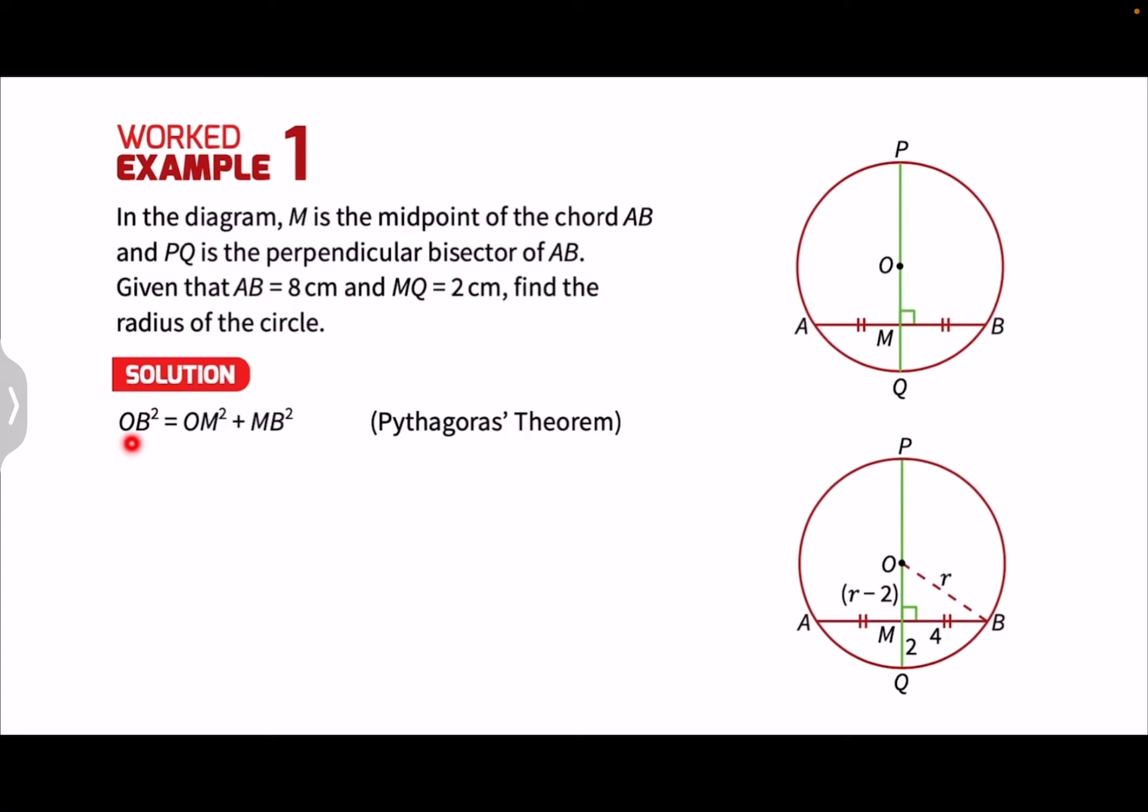Substituting the values of OB, OM, and MB we'll have R square equals R minus 2 square plus 4 square. We'll now expand the brackets for this R minus 2 square term. We'll have R square equals R square minus 4R plus 4 plus 16.